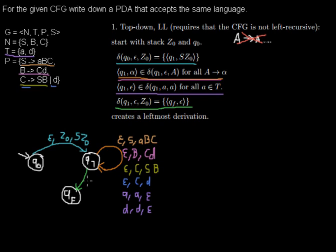We want to read nothing from the input and read z0 from the stack, pushing nothing. So this automaton accepts by empty stack. If I changed qf to a final state it would accept the same words by final state — it doesn't really matter. That's everything for the construction. In the next video I will show you how this automaton reads input strings. Thanks.